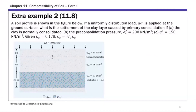This is example 2 of chapter 11. For this example, we are given a soil profile with a 3.5-meter clay layer and a sand layer on top. The groundwater table is 2 meters below the ground surface. We're going to calculate the settlement of the clay layer caused by primary consolidation by adding a surface load of 100 kN per meter squared to this soil profile.